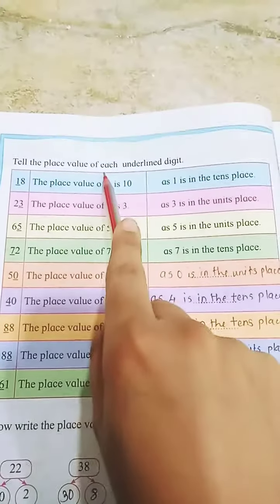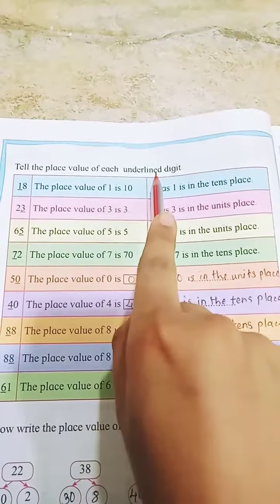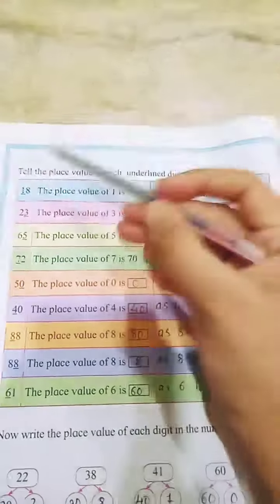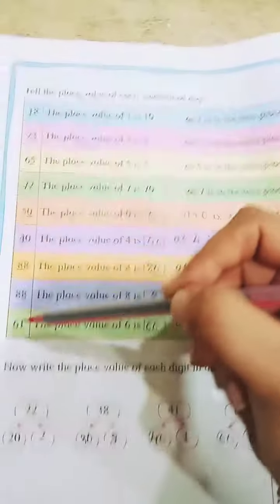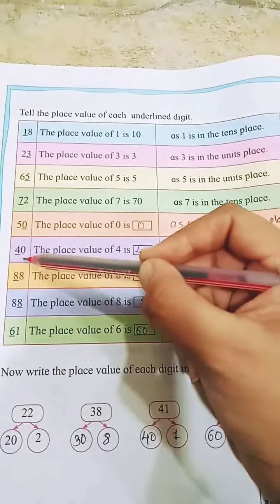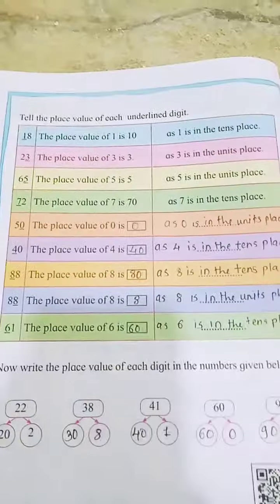Tell the place value of each underlined digit. They have given here some numbers, and in those numbers one digit is underlined. We have to find out the place value.